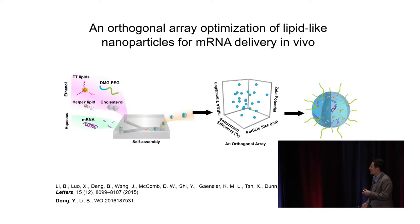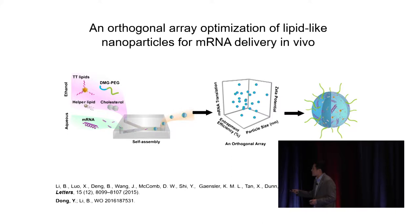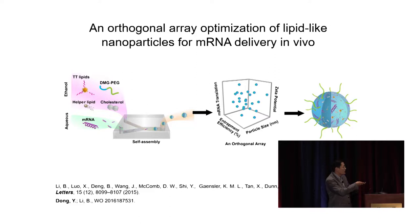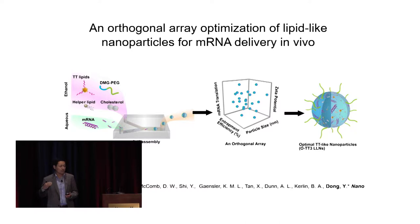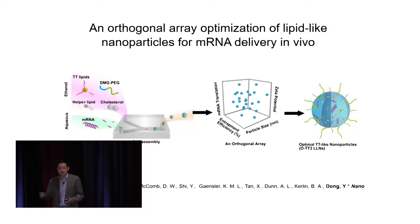This slide gives an overall strategy for how we develop and optimize lipid-like nanoparticles. The newly synthesized TT lipids are formulated with three formulation components, with messenger RNA as the therapeutic cargo. Using a microfluidic-based device, we self-assemble them into nanoparticles and characterize size, zeta potential, mRNA entrapment efficiency, and translation efficiency. We utilize orthogonal experiment design to efficiently identify the optimal formulation with significantly reduced experimental numbers, then test in different disease models.